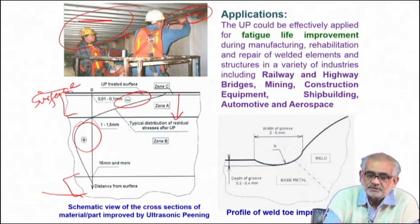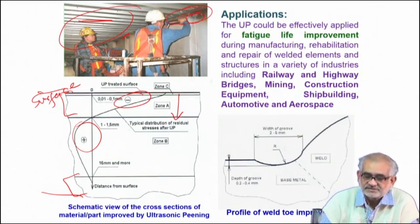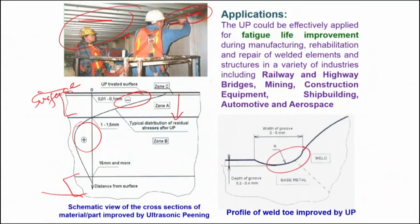When talking about difficult-to-access regions, the corner — the root of the weldment — is also very important, in fact more important than the rest of the weldment. Using ultrasonic pinning you can access it better than shot peening; depending on the striker size, you can treat these regions very well and create a state of compressive stress at the toe or root of the weldment.